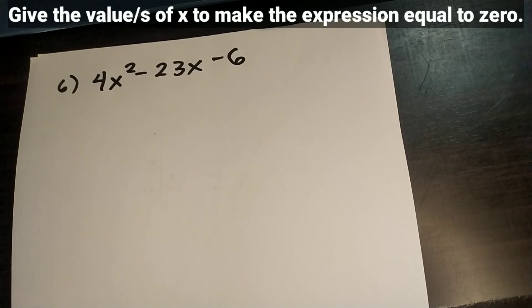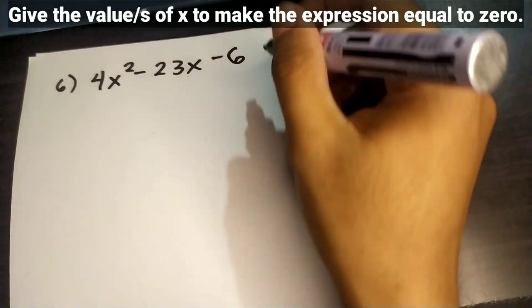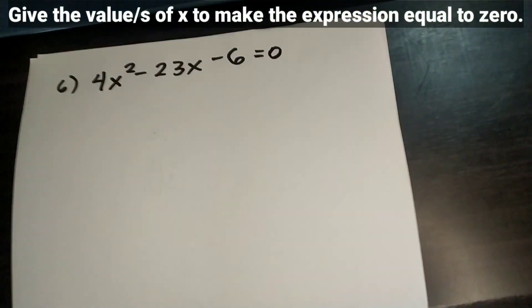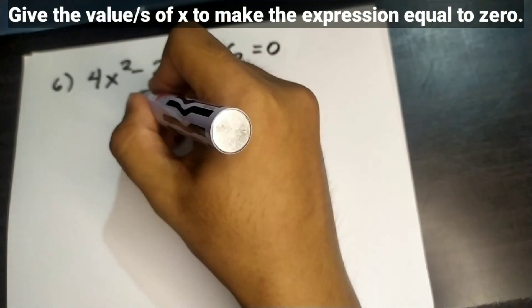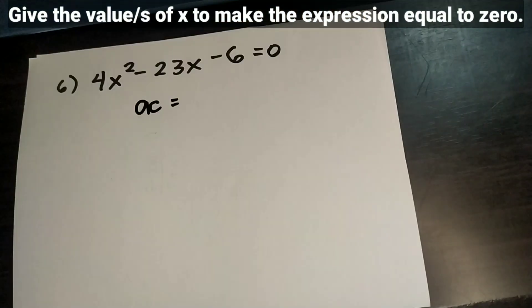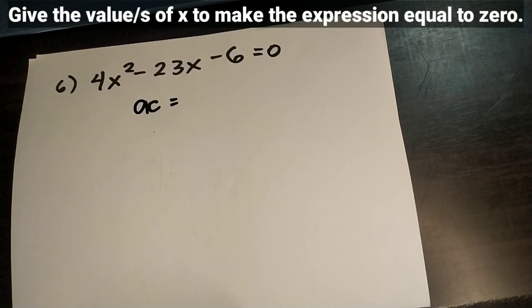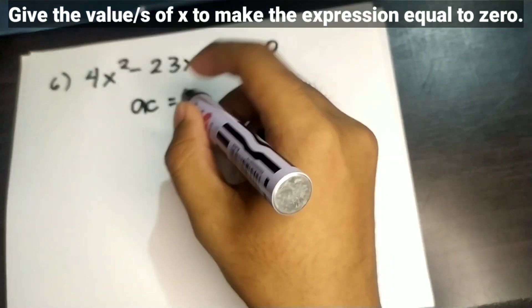Let's now have Number 6. Find the values of x to make this expression equal to 0. The equation becomes 4x squared minus 23x minus 6 is equal to 0. To find the values of x, we will factor this using general trinomial where a is greater than 1, since the numerical coefficient of the first term is 4. So we will use the AC method.